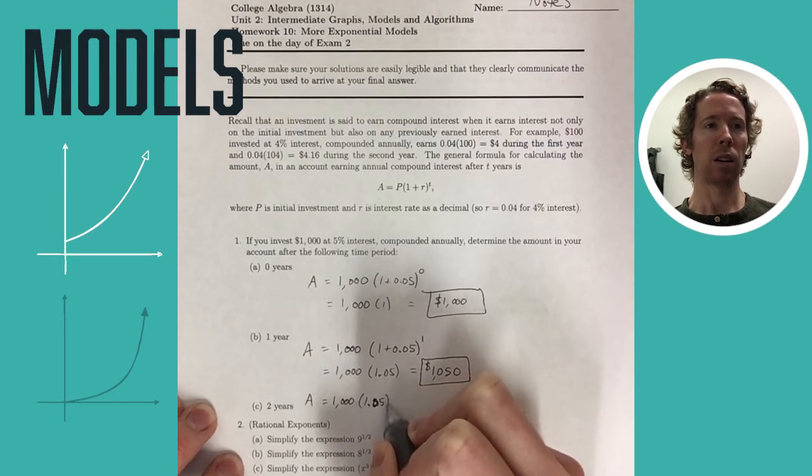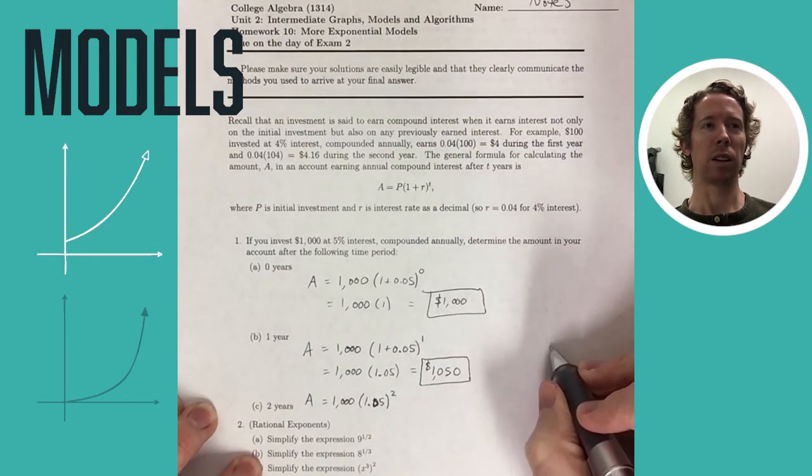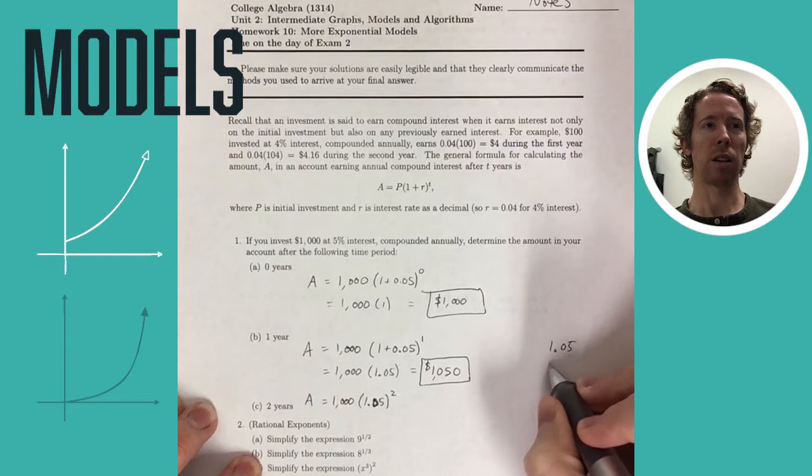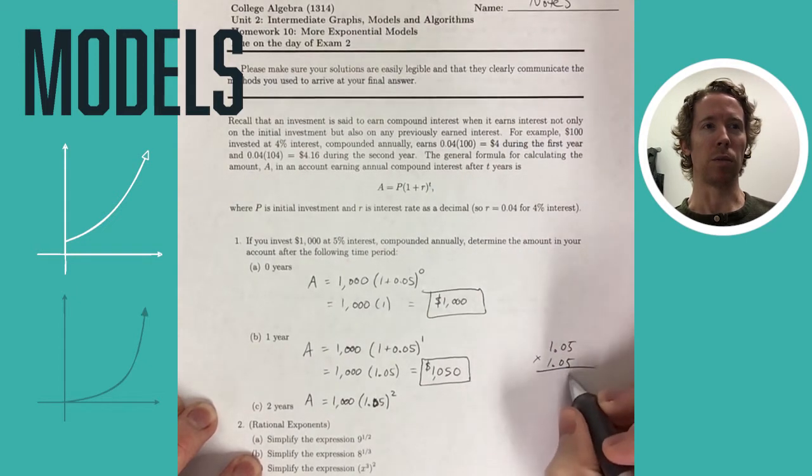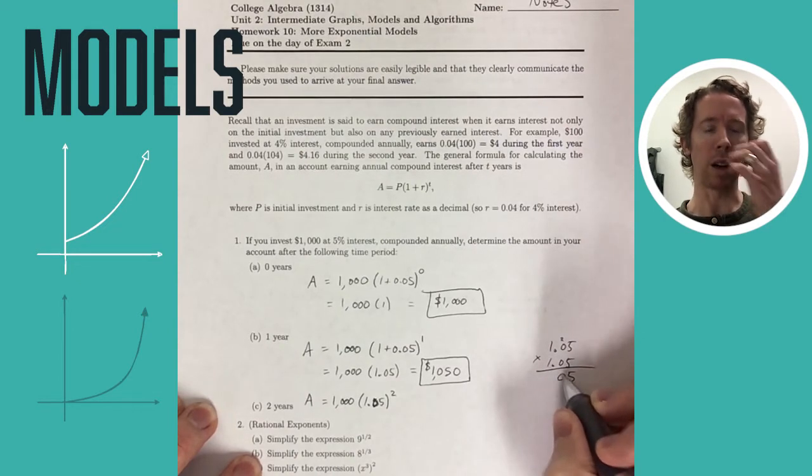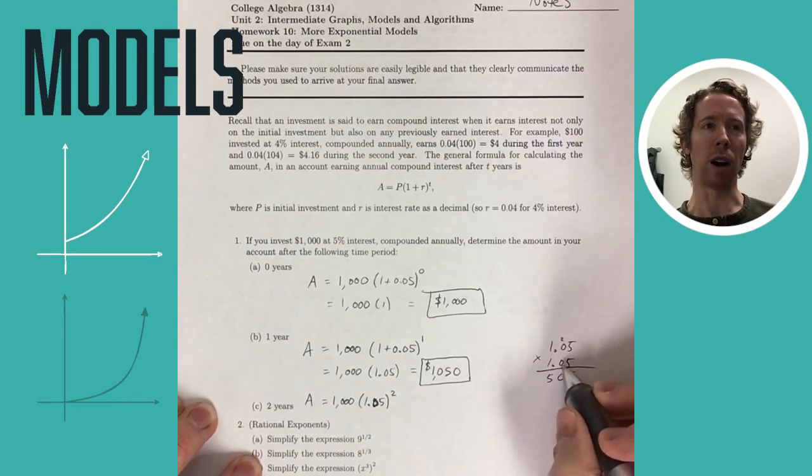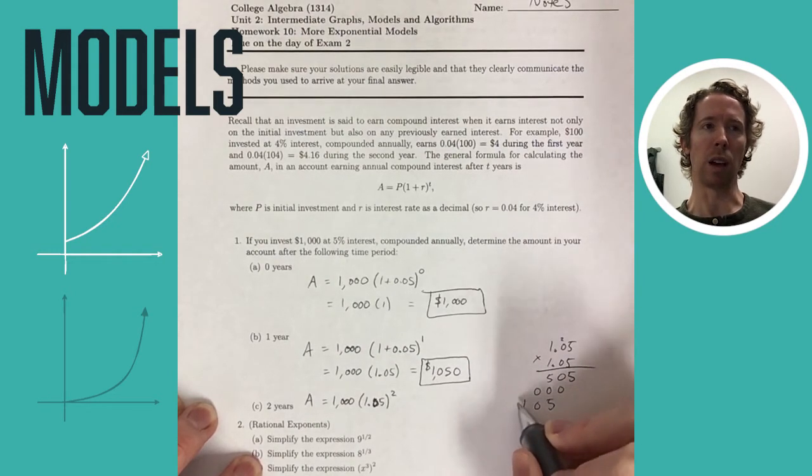If you're doing it by hand, you just multiply 1.05 times itself. It may have been a while since you've done that, so I'm doing it here off to the side. You set it up with the decimals there, and then you multiply it out, kind of like you're multiplying 105 times 105. But then at the end, you're going to move the decimal four places to the left.